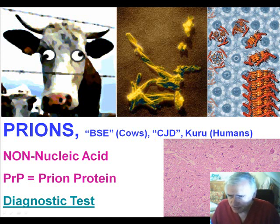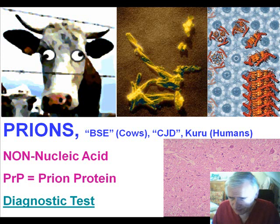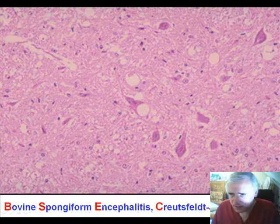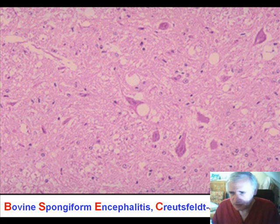In humans, CJD and Kuru are the common prion diseases, with a couple of others, and in cattle there is BSE. Microscopically, both BSE in cows and Creutzfeldt-Jakob disease in humans have the same appearance. Looking at a brain section, you can see neurons and glial cells, but the notable finding is that in the myelinated matter there are these spongy little holes — that's why the 'S' in BSE stands for spongiosis. The central nervous system takes on a spongy appearance due to infection by these non-DNA infectious protein particles.